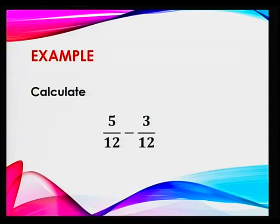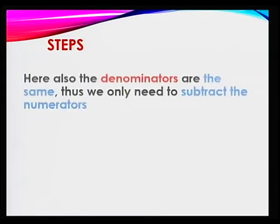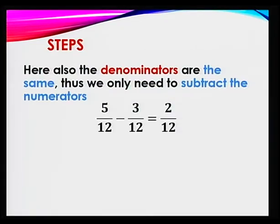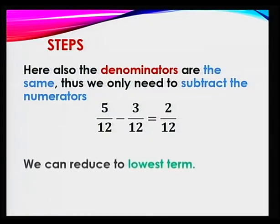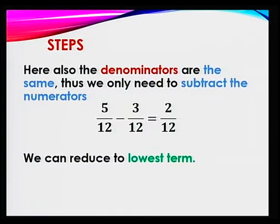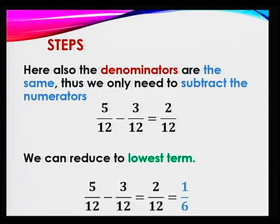Let's take another example with subtraction. Suppose that you have 5 over 12 minus 3 over 12. How do you do that? First step: always check the denominators. Are they the same? Yes, they are. So you just need to subtract the numerators. 5 minus 3, which is 2. That is, 2 over 12. Now remember, you need to reduce to its lowest term. 2 over 12, which is simply 1 over 6. That's the answer.